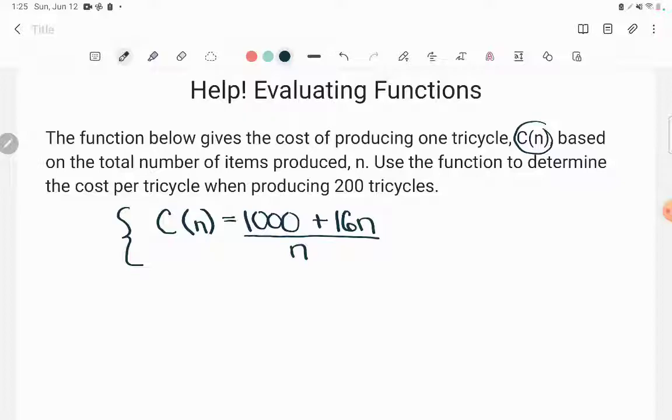So in this case, you might say, well, what are the letters here? One of them is C or also called C of n. You might say, Kate, that's two letters. Yeah, I'm going to talk about that in a second. And the other one is n.